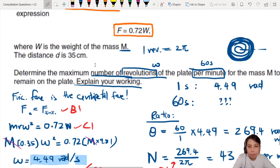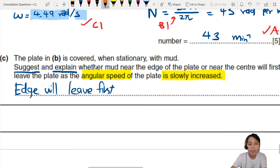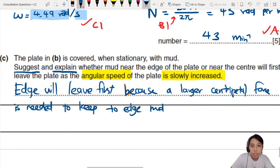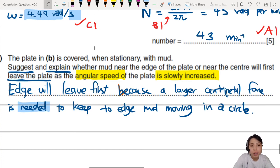Let's describe the whole thing. The edge will leave first because a larger centripetal force is needed at the edge. Important is centripetal force needed to keep the edge mass moving in a circle. The point is we want it to move in a circle. If not, it'll just fly off in a straight line. But we want it to move in a circle because we don't want it to leave the plate.